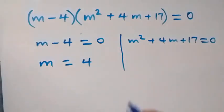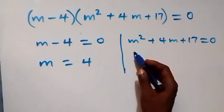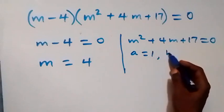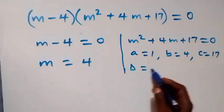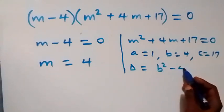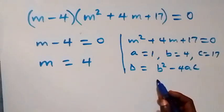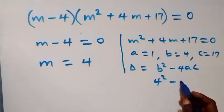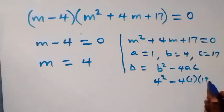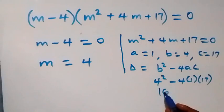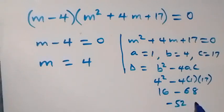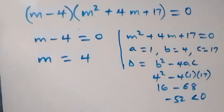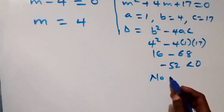For the quadratic m squared plus 4m plus 17, we check using the discriminant: b squared minus 4ac, with a equals 1, b equals 4, c equals 17. That gives 4 squared minus 4 times 1 times 17, which is 16 minus 68, equals negative 52. Since this is less than zero, there is no real solution from this side.